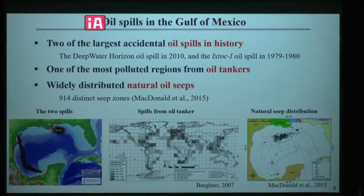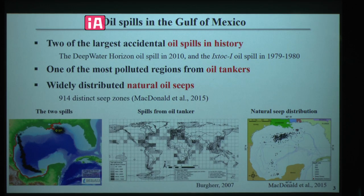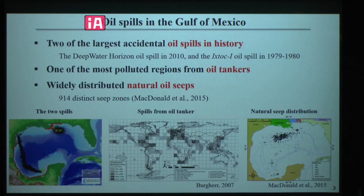The Gulf of Mexico has experienced two of the largest accidental oil spills in history. It is also highly polluted by oil tankers. Here's a global map of oil spills from oil tankers — the darker the color, the more polluted. Besides this anthropogenic oil spill, the Gulf of Mexico also has widely distributed natural oil seeps concentrated in the western Gulf of Mexico.